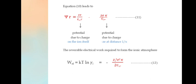The reversible electric work done to form the ionic atmosphere is W = kT·ln(γi), where γ is the mean activity coefficient. This equals -Zi²e²κ/(2εR).